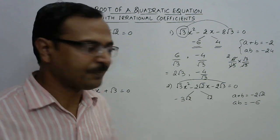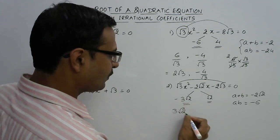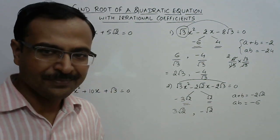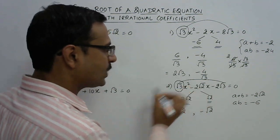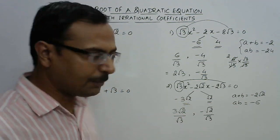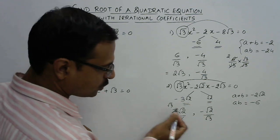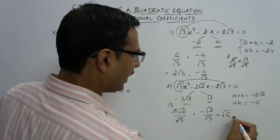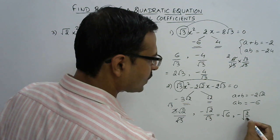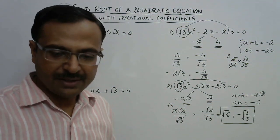The middle term is split. Now change the sign: -3√2 becomes +3√2 and √2 becomes -√2. Then divide by the coefficient of x², which is √3. The 3 cancels with √3 giving √3 × √2 = √6. The second answer is -√2/√3, which simplifies to -√(2/3). So the answers for the second question are √6 and -√(2/3).